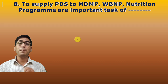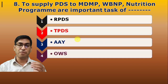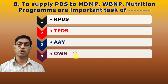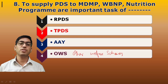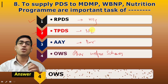Eighth question: Supply of PDS to schemes like Midday Meal Program (MDMP), Wheat Based Nutrition Program (WBNP), and nutrition programs for old age persons — these are important tasks of which scheme? These are welfare schemes, and the answer is Other Welfare Schemes (OWS). RPDS is for hilly regions and TPDS is for the poorest of the poor, while OWS covers these other welfare program distributions.